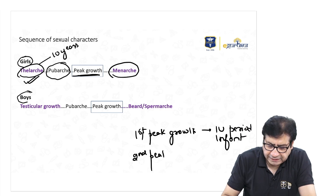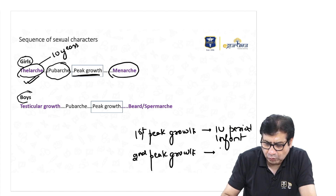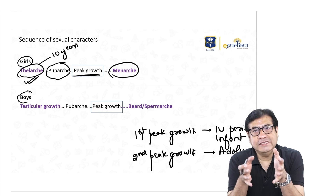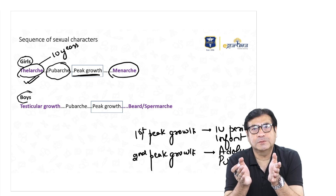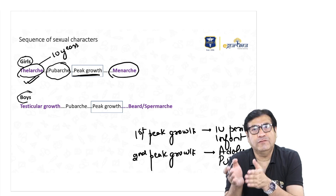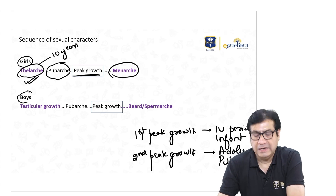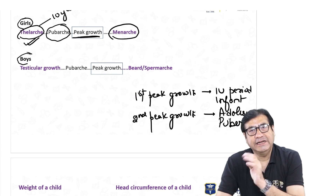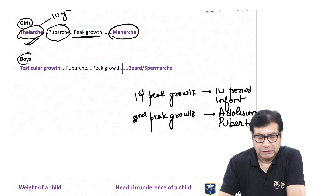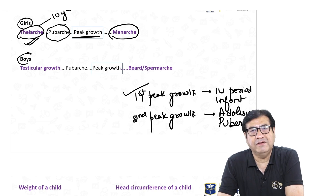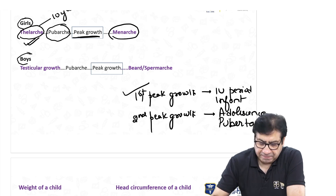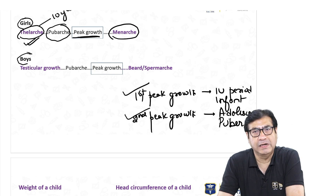The second peak growth period is the adolescent or pubertal growth spurt. So to summarize: the first growth spurt occurs during intrauterine life and continues into the first year of life, and the second peak growth period is the period of adolescence or puberty.